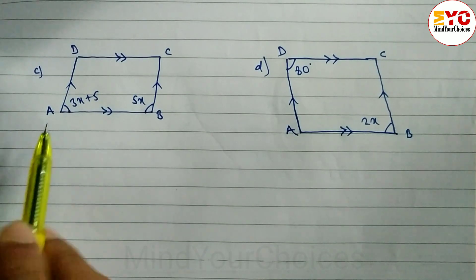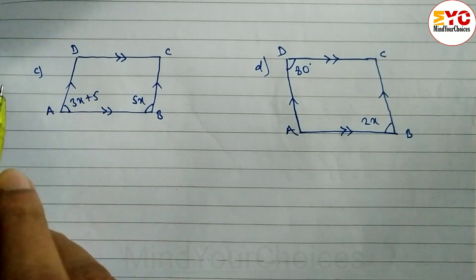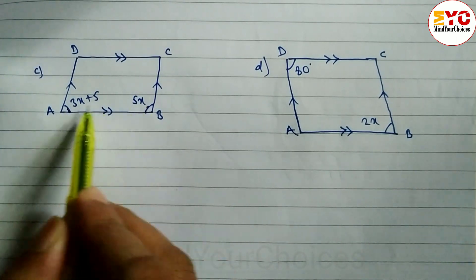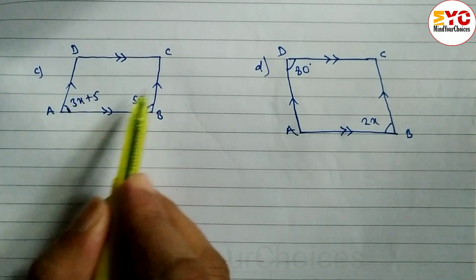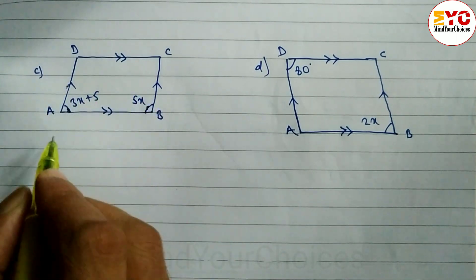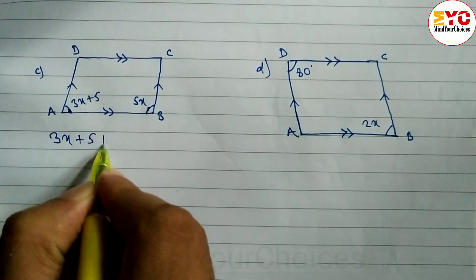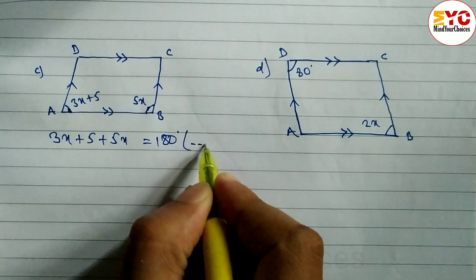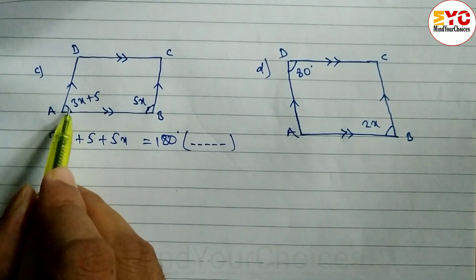Now look at question number c. You can see here ABCD is a parallelogram. Here we don't have opposite side angles — this angle and this angle are given. What is the relation of these two angles? Co-interior, because these two lines are parallel and both angles are inside the two parallel lines. So we can write 3x plus 5 plus 5x is equal to 180 degrees.